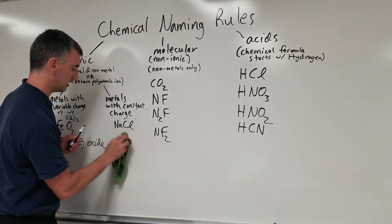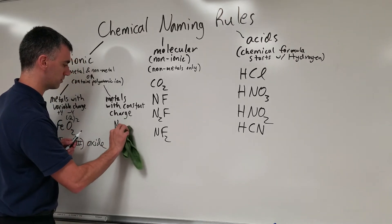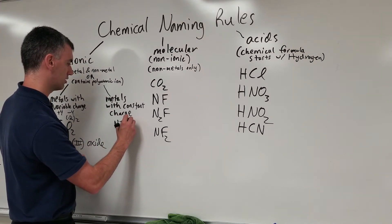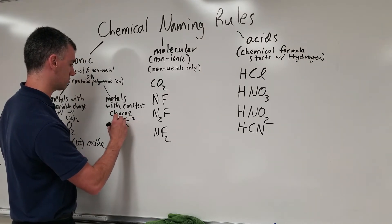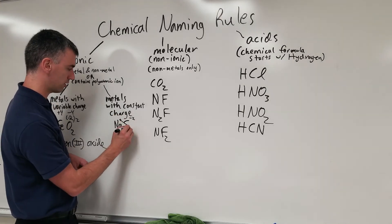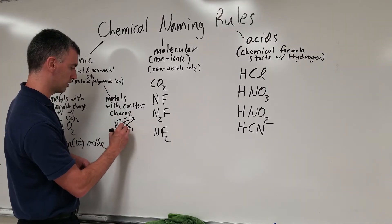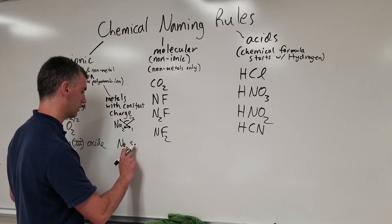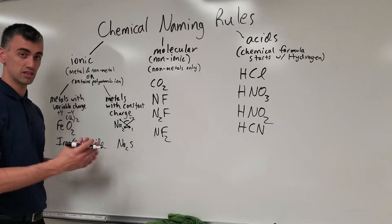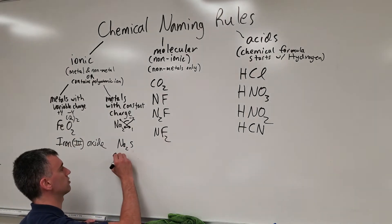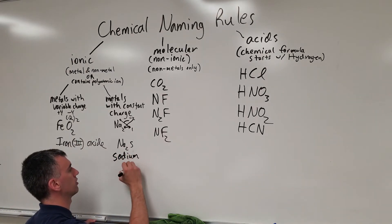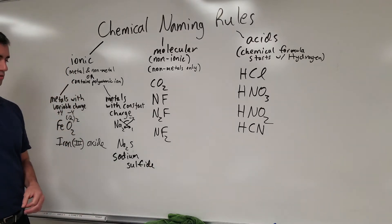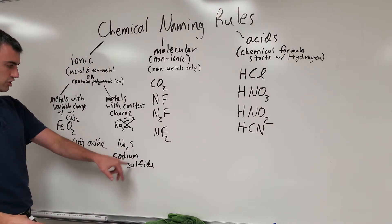Even, it doesn't matter how many there are. For example, if I have sodium with S. S is a charge of minus two, sodium is a plus one. So the correct formula has one sulfur and two sodium. Na2S would simply be called sodium sulfide. This number does not change the naming.